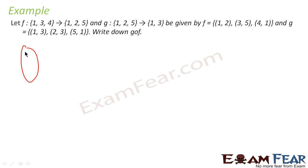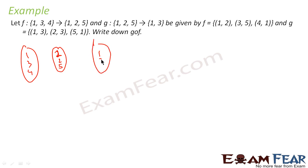We will take one more scenario. This is a function f defined from {1, 3, 4} to {1, 2, 5}, and a function g defined from {1, 2, 5} to {1, 3}. The pairs for f are: (1,2), (3,5), and (4,1).